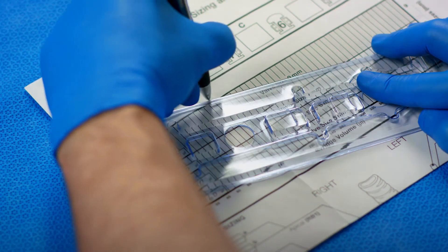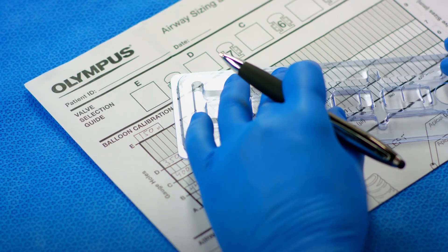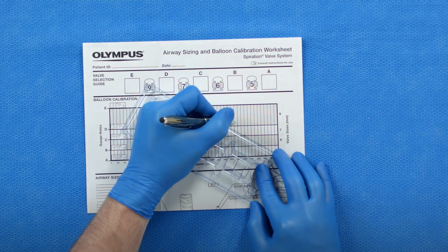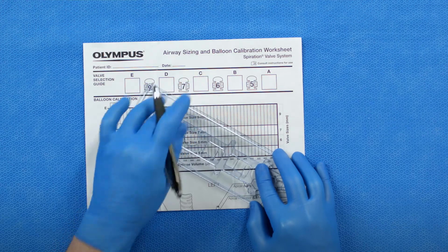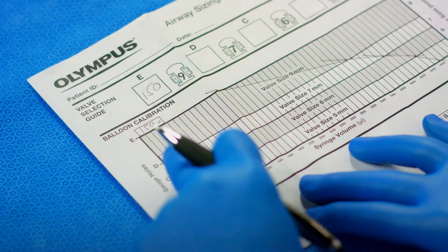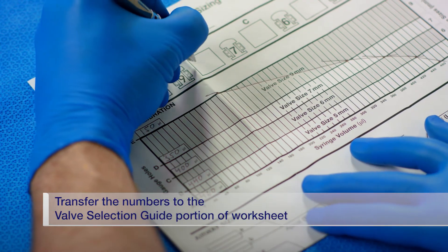After all the gauge hole sizes have been recorded, plot the values and connect each of the points on the balloon calibration section of the worksheet with a straight line. Verify that the curve is continuous, then transfer the numbers to the valve selection guide portion of the worksheet.